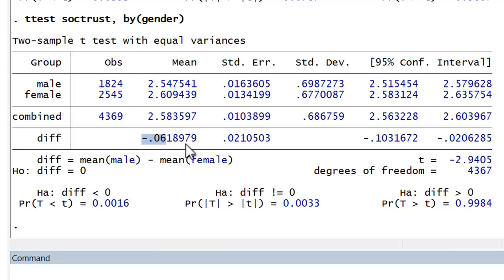Had females been the first category, this would have been a positive difference. More often than not, we're simply interested in the absolute value of that difference. Positive or negative comes into play if we actually had specified a direction to the difference, whether we had specified that females or males would have a higher average level of social trust. And I'll say a little bit more about that in a second.